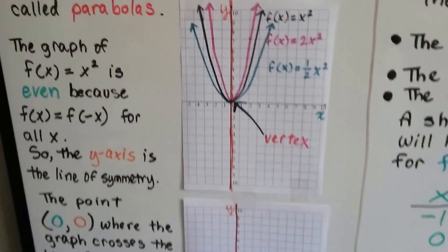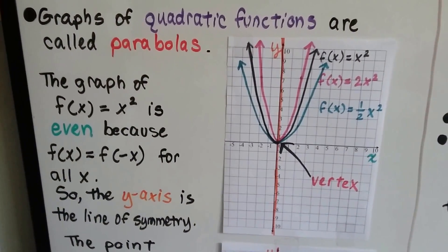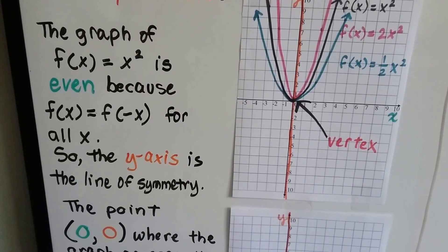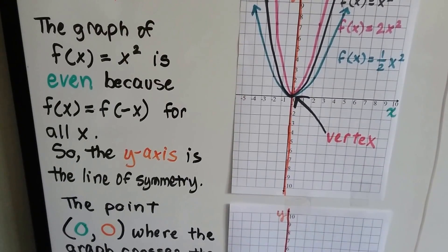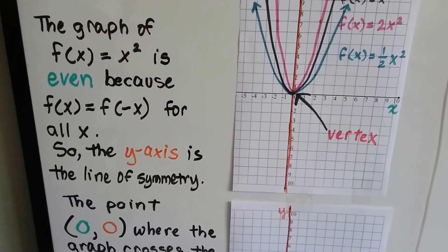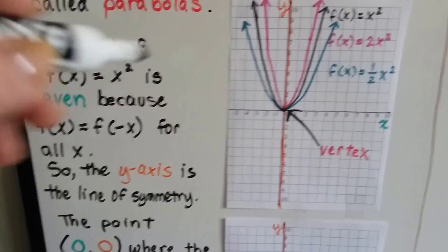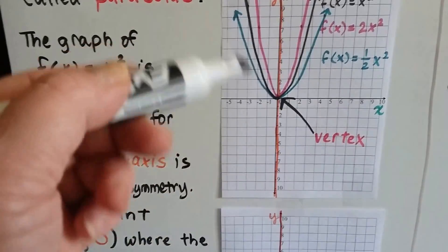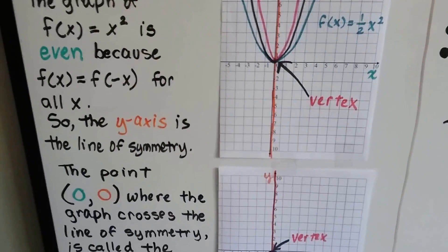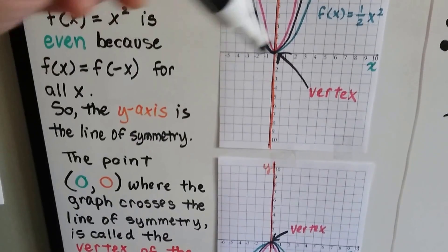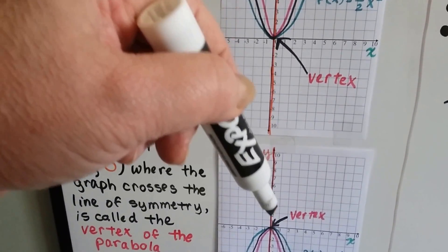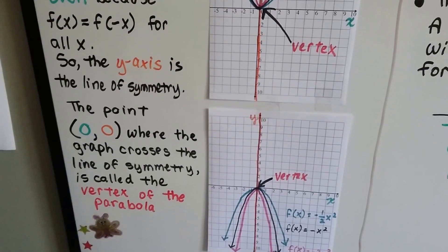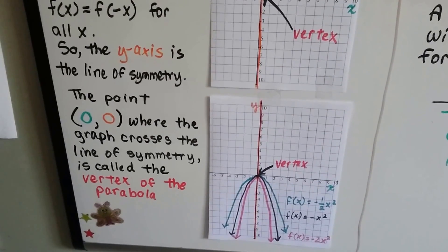The graph of f(x) equals x squared is even because f(x) equals f(-x) for all x, so the y-axis is the line of symmetry and it reflects perfectly across it. The point (0, 0) is the origin, and where the graph crosses the line of symmetry is called the vertex of the parabola.